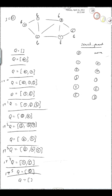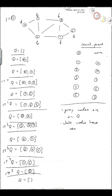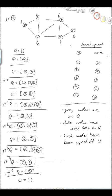That's the end of the breadth-first search example. Let's point out a couple of useful things. First, another meaning for the colors: gray nodes are on the queue, white nodes have never been on the queue, and black nodes have been popped off. That's an easy way to remember what the colors mean.